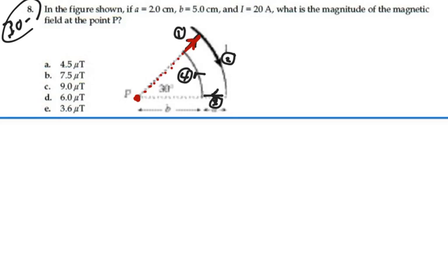Now if I look at segment number 1, I have a current flowing in this direction, but in relation to point P, P is actually off the end, it's on the same line as that current. So P is off the end of that current, and hence there would be no magnetic field contribution at point P due to that segment of current.